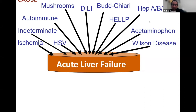Then you have acute viral hepatitis — especially hepatitis A, hepatitis B, and hepatitis E — depending on which part of the world you are in. There are other causes like, in pregnancy, HELLP syndrome or acute fatty liver of pregnancy. In someone with history of oral contraceptives or myeloproliferative disorder, we occasionally see Budd-Chiari syndrome, which is occlusion of the hepatic vein, that can present with acute liver failure.